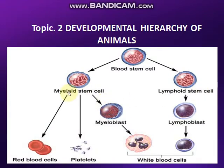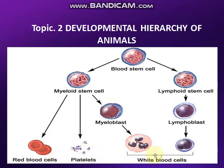Is poori cell fate aur potency ko main ek diagram ke through demonstrate karti hoon. Aapke paas ek blood stem cell hai. Aage se kitni tarah ke cells ko yeh give rise kar raha hai - yeh ek cell aage se jitni tarah ke cells produce kar sakta hai, yeh kya hai? Uski potency. Aur divide karta karta kuch red blood cells ban gaye, kuch platelets ban gaye, kuch WBCs ban gaye - yeh jo bilkul final image aayi hai, yeh uski cell fate hai.